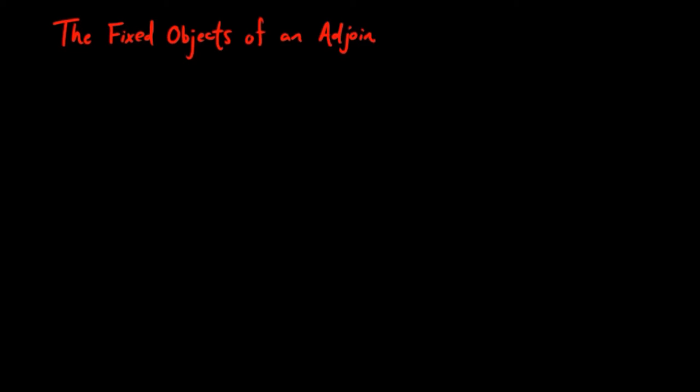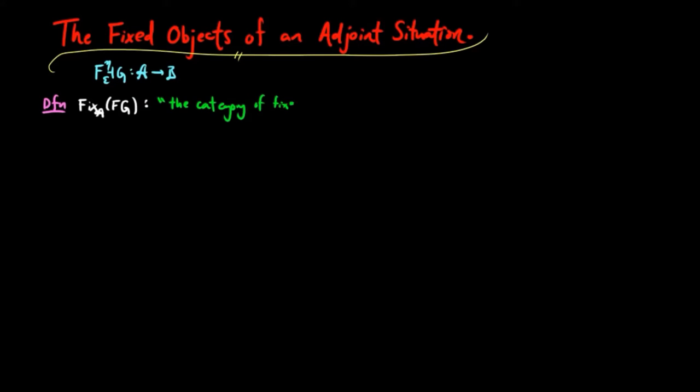In this section, we look at the fixed objects of an adjoint situation. Given an adjoint situation FG, we define the category of fixed objects of FG in A to consist of A objects, A, such that the morphism of the co-unit on A is an isomorphism.